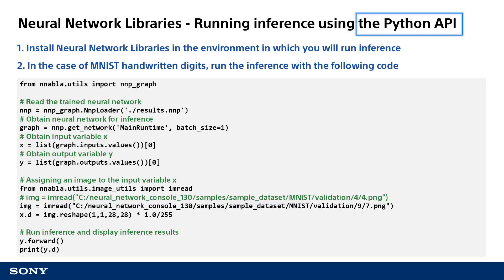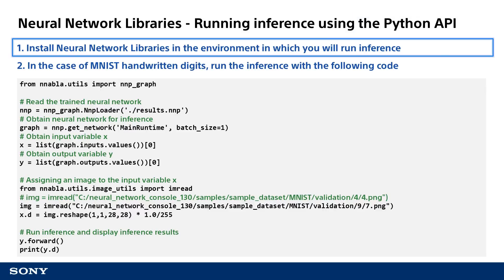Next, I would like to cover the method of running inference via Python API. In comparison with the previous method of using the command line interface to run inference, this method requires understanding of the neural network library's API, but this method is much more efficient. If using Python to run inference, I personally think this is the better of the two methods. First, make sure to install neural network libraries into your environment as previously described.